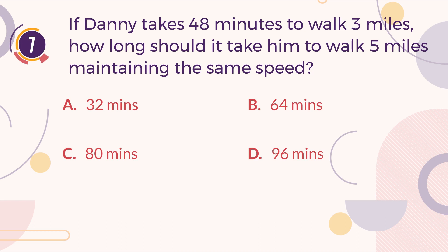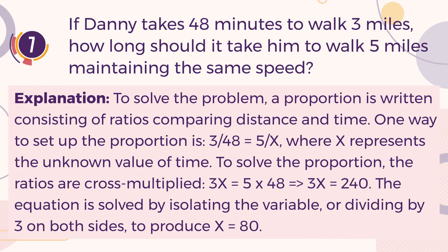The correct answer is C. 80 minutes. Explanation. To solve the problem, a proportion is written consisting of ratios comparing distance and time. One way to set up the proportion is: 3/48 equals 5/X, where X represents the unknown value of time. To solve the proportion, the ratios are cross-multiplied: 3X equals 5 times 48, or 3X equals 240. The equation is solved by isolating the variable, or dividing by 3 on both sides, to produce X equals 80.